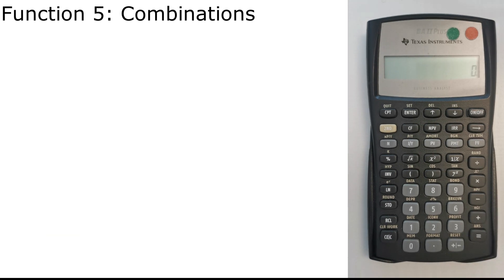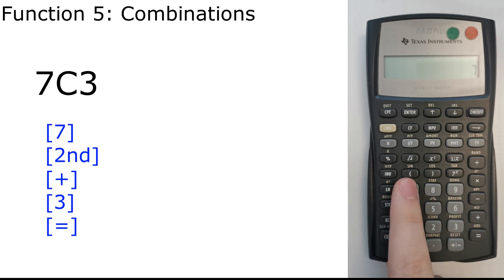And if you want to calculate for a combination, what we also do is we press 7, 2nd, then C which is plus, so nCr is plus. Then we press 3, equal. We get 35.